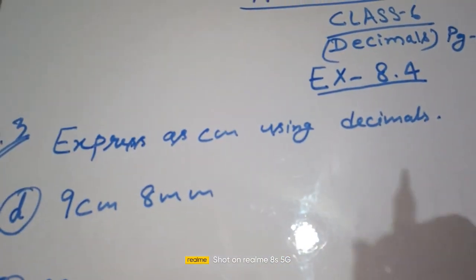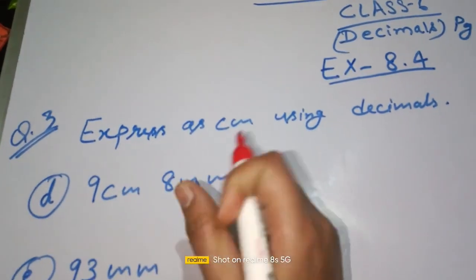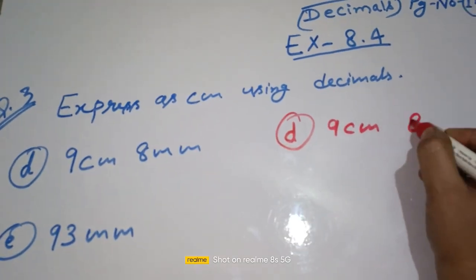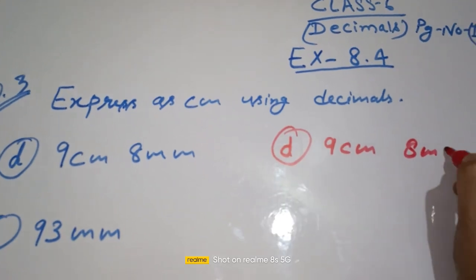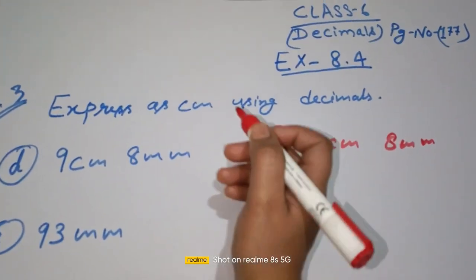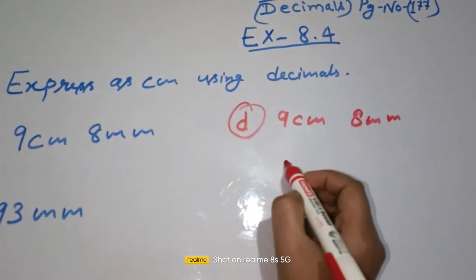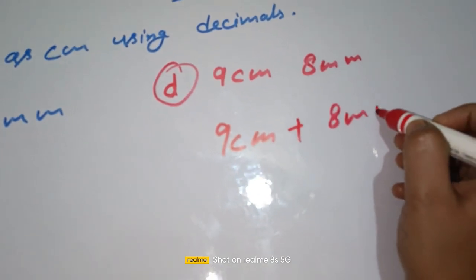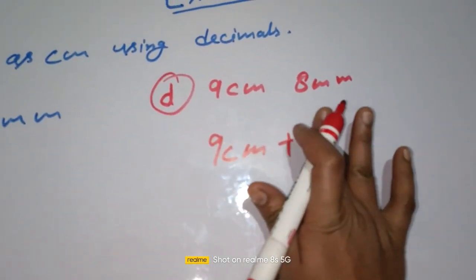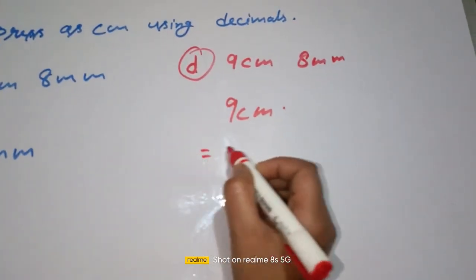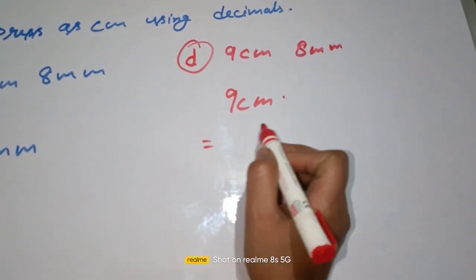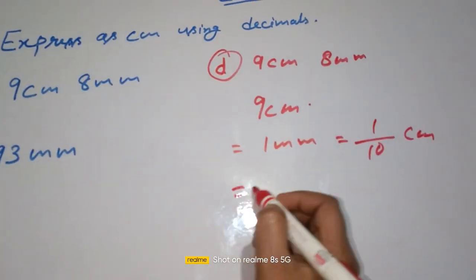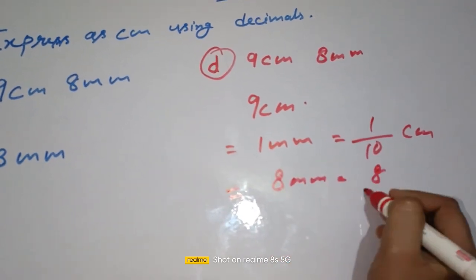Express as centimeters using a decimal. Part D: 9 centimeters 8 millimeters. We know that 1 mm is equal to 1/10 cm. So 8 mm is equal to 8/10 cm.